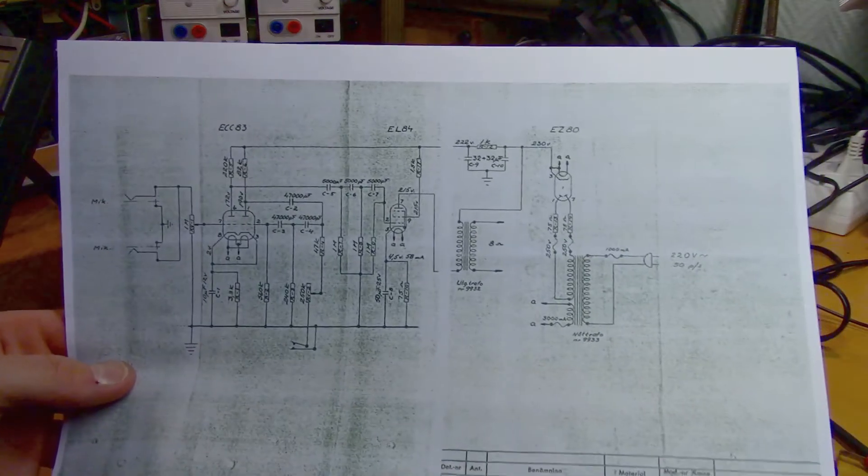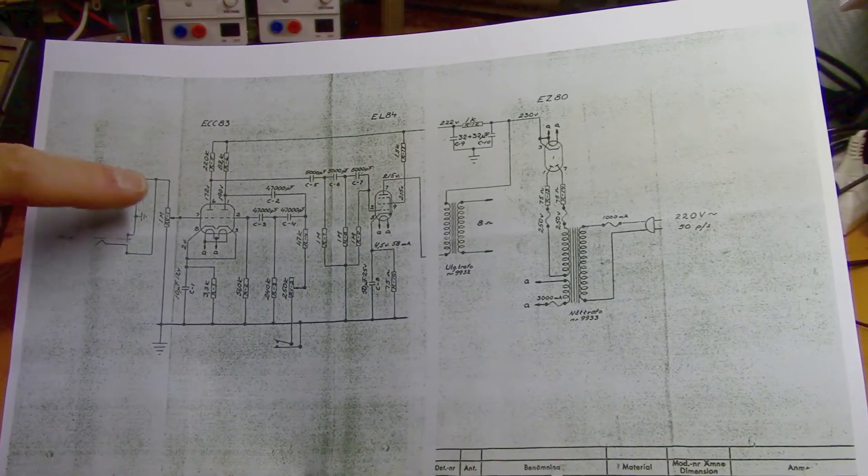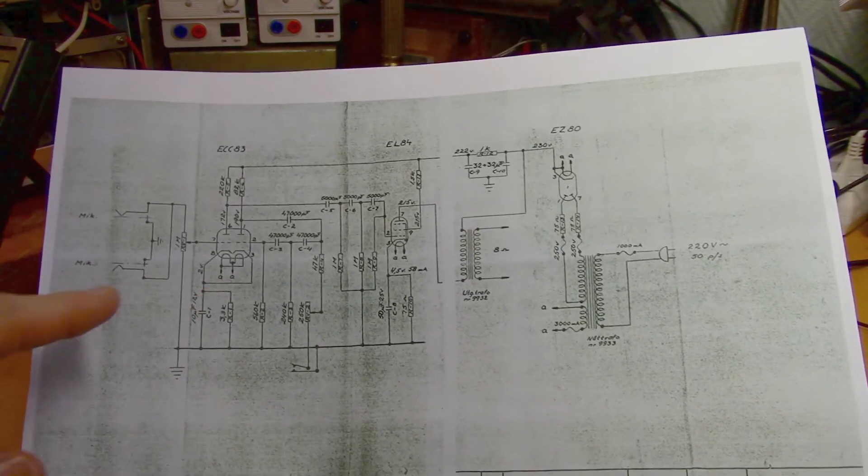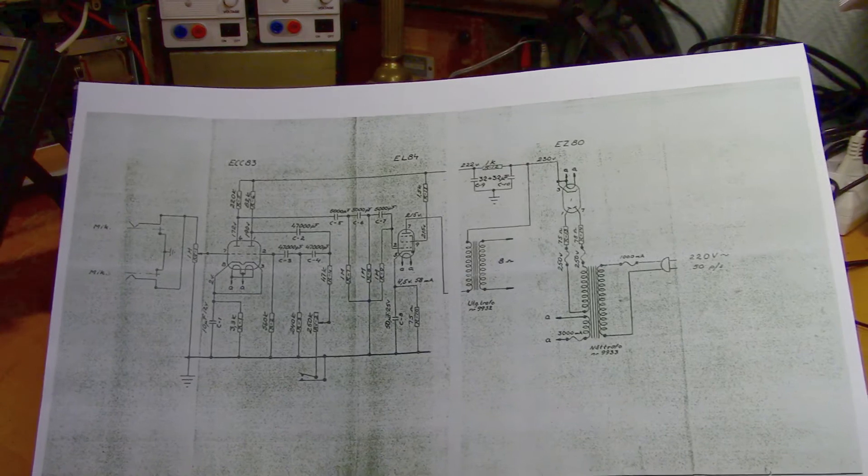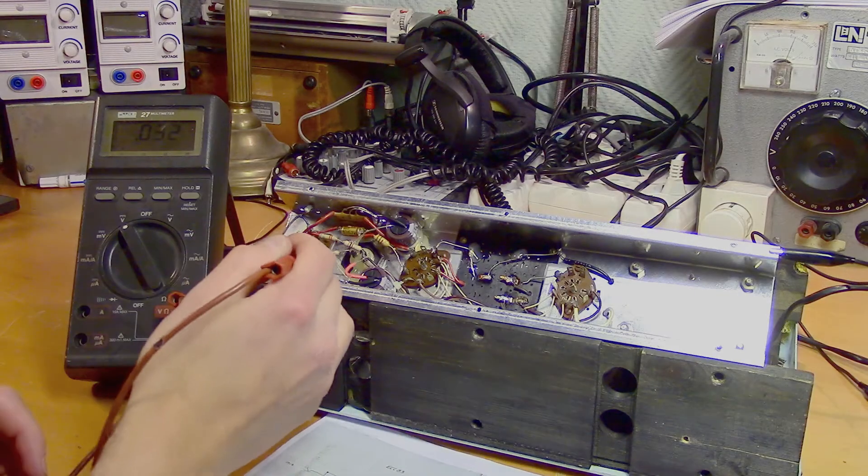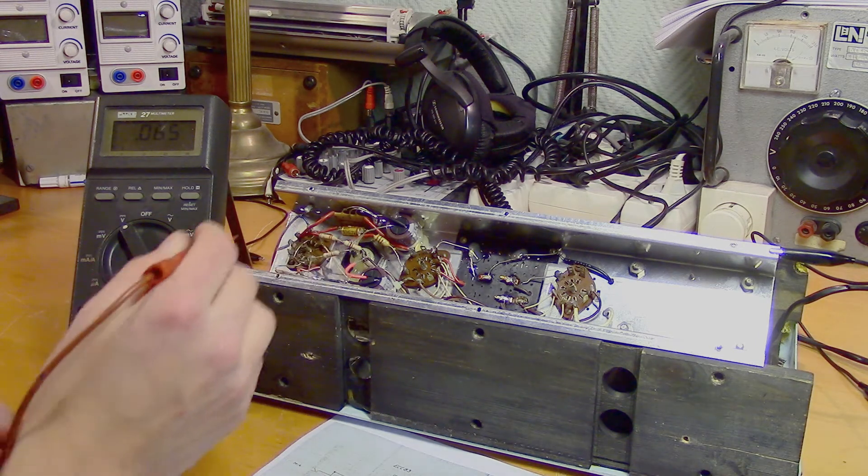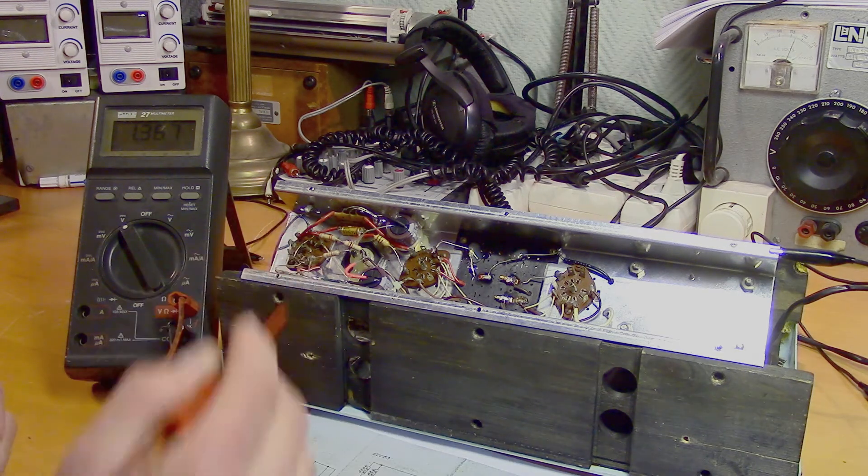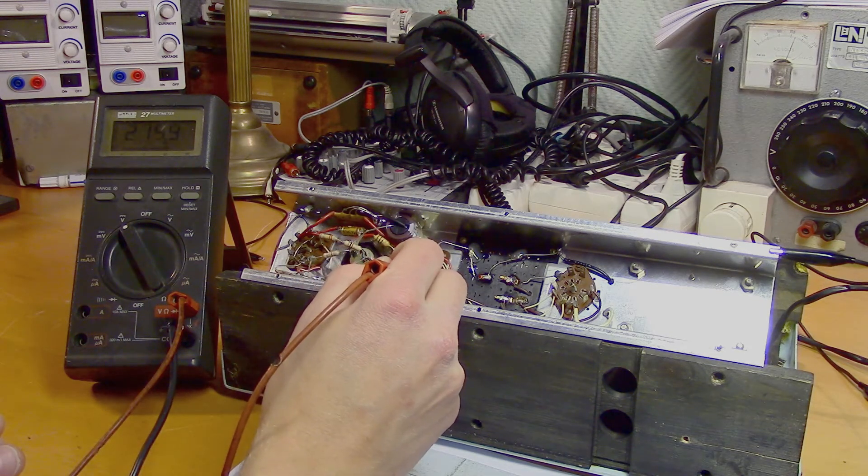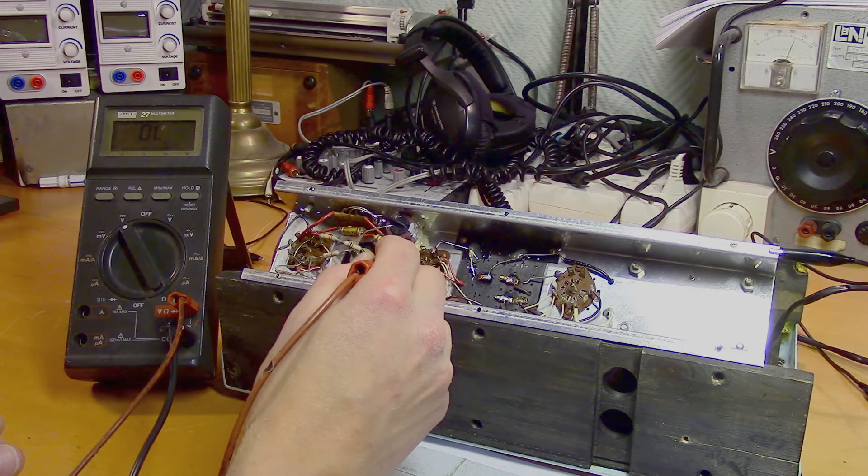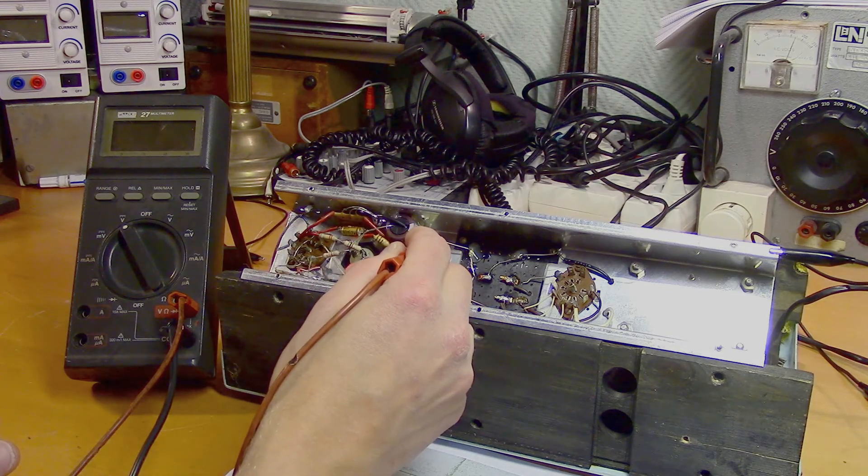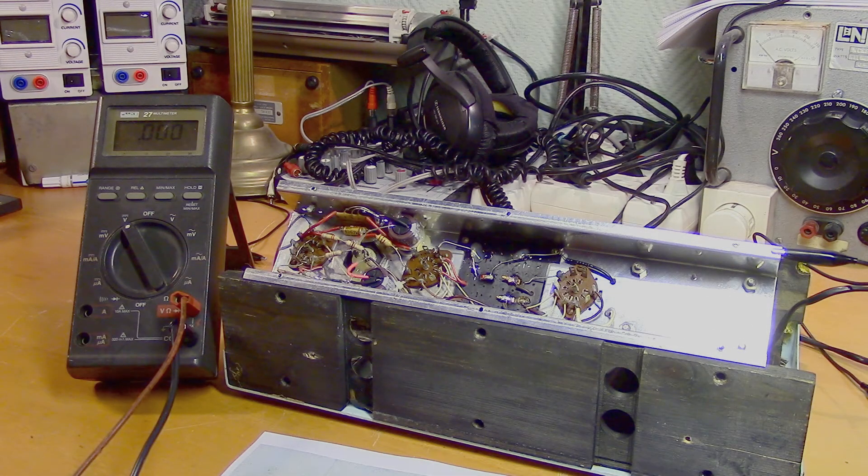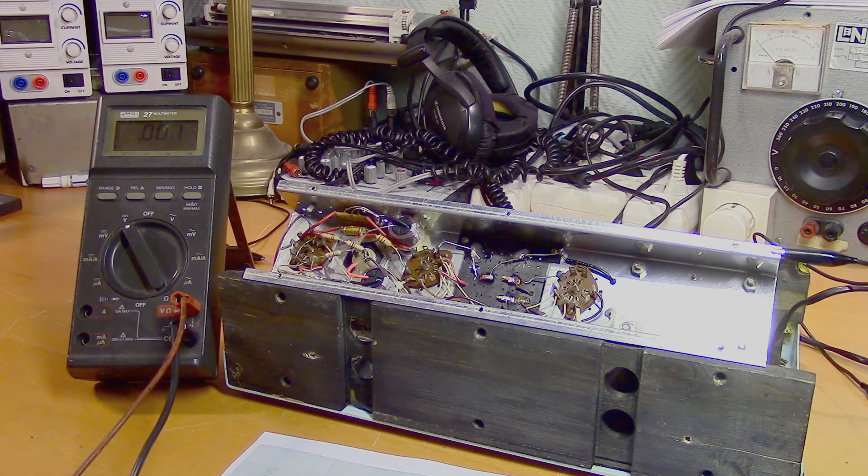So I found this old schematic of the Hågström 26. And one very nice thing here is that they've written out the bias voltage for the tubes. So that's a pretty good way to start troubleshooting. If any of the tubes are improperly biased, that could be the cause of the distortion. So let's start measuring the voltages and see if they match the schematic. The bias voltages match the schematic pretty well. I also checked the resistor values to make sure that the bias current of the tubes were correct, and I couldn't find anything that deviated from the schematic.